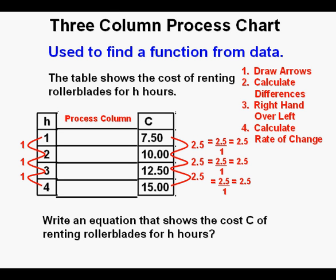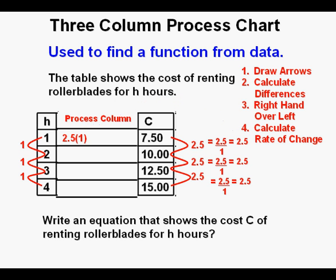These three identical rates of change prove to us that this relation or function is linear. Now we take this rate of change, 2.5, and move it over to the Process Column. Then we multiply the rate of change by the number in the Input Column — 1. And then we add an unknown number, placed here as a question mark. So 2.5 times 1 plus the unknown number equals the output value 7.5.